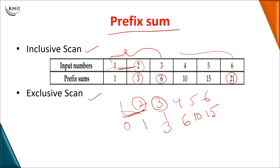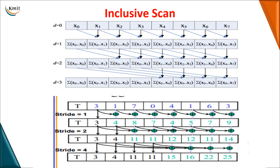Now, to implement inclusive scan in parallel, we need to design an algorithm. You will be given a set of values. At the first step, called stride 1, no operation is performed on the first element — it is taken as is. From the second element onwards, adjacent elements are summed up: 3+1=4, 1+7=8. Adjacent summation is done at the first iteration. When going for stride 2, you copy elements as is and start adding from the third location onwards.